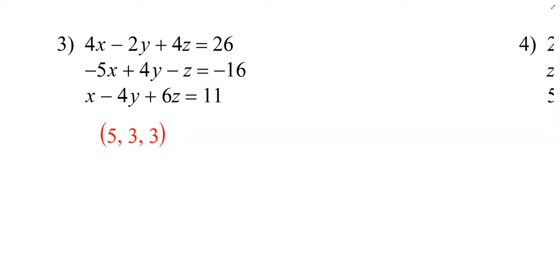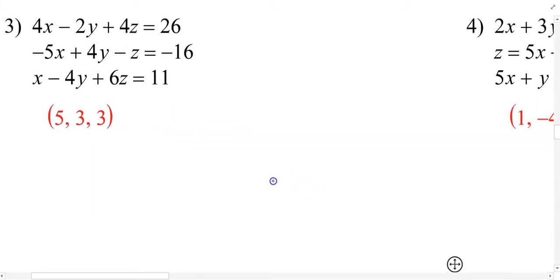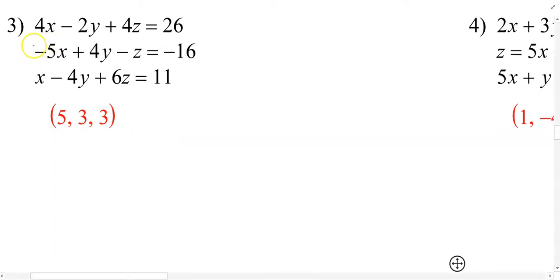So in this 3 by 3 here, I'd say the goal would be to pick two equations in which you can eliminate one variable, and that ending result, that combination of those two, we would then call like an A equation. And then if we pick a different pair of equations to eliminate the same variable, the end result there we might call our B equation.